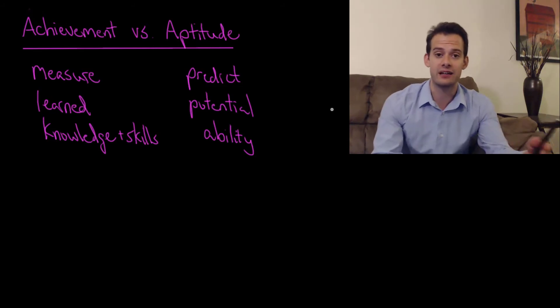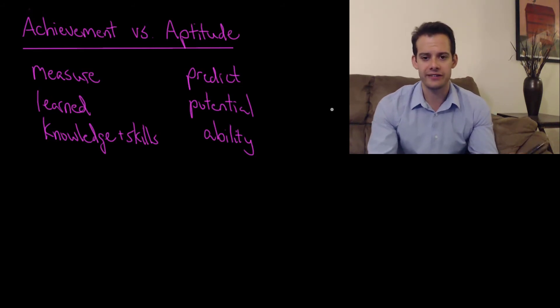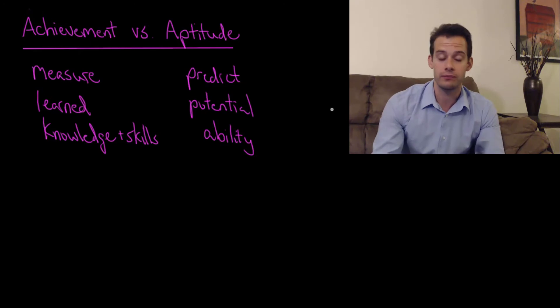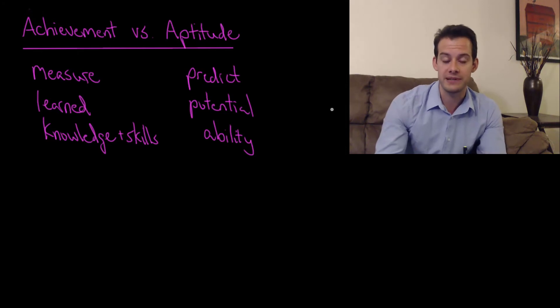We want an IQ test to be able to predict future performance. We don't want to just measure things that you already know because then obviously as you get older you know more and more things and your IQ would just continuously rise throughout your life. And that's not really what we're interested in when we assess intelligence. We want to know about potential for the future.